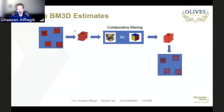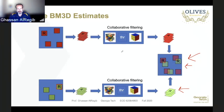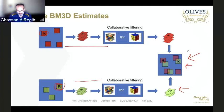This creates a challenge: consider a pixel appearing in both the red reference block and the green reference block. After doing BM3D with the red reference, that pixel has one estimate. After doing it with the green reference, it has another estimate. In fact, with many overlapping blocks, a single pixel might have 10 or more different estimates. This is where the third component — fusion — comes in.